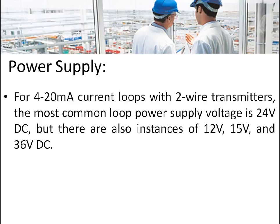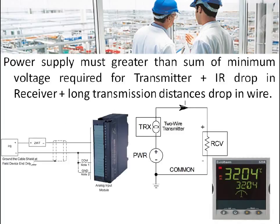24V is the most commonly used DC power supply. In addition to this, 12V, 15V, and 36V DC power supplies are also used. The power supply must be greater than the sum of the minimum voltage required for the transmitter, which may be 10V or 12V depending upon the type and manufacturer, plus IR drop in the receiver. The receiver may be a PLC module or a controller where the current signal is converted to voltage, plus the drop in the transmission line.